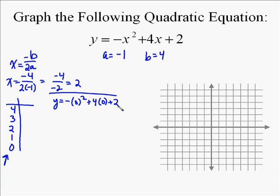So you put the 0 in for x. You're going to have negative 0 squared plus 4 times 0 plus 2. Well, that's just going to give you 2, because those 0s just go away. So using symmetry, we're going to find out that 4 also equals 2.